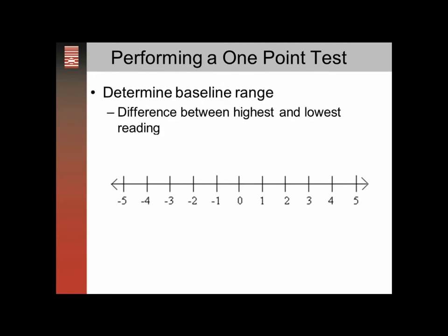To determine the baseline range, find the difference between the lowest and highest reading. For example, if our lowest reading is negative 2 and our highest reading is positive 2, the difference is 4. You can think of it as 2 minus negative 2 — minus a negative is a positive. Or you can think of it in absolute value. The easiest way is to visualize it on a number line: the difference between negative 2 and positive 2 is 4, because you first go from negative 2 to 0 (that's 2), and then to positive 2 (2 more), so that range would be 4.